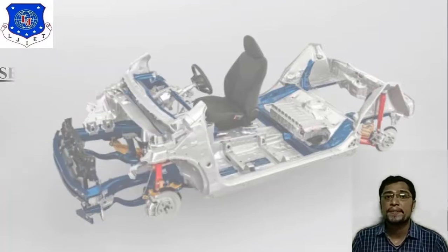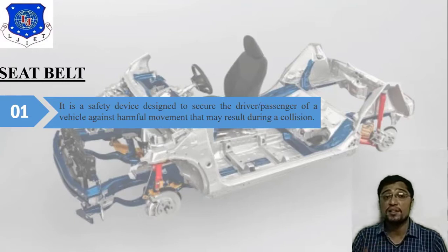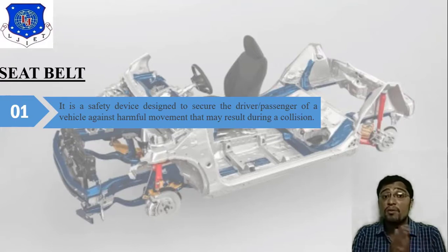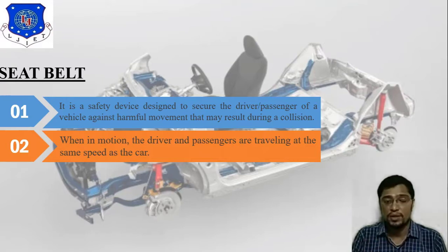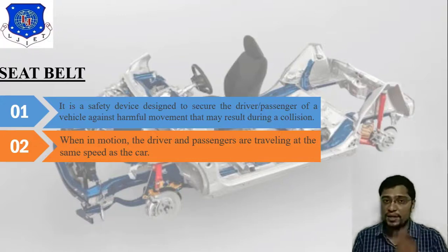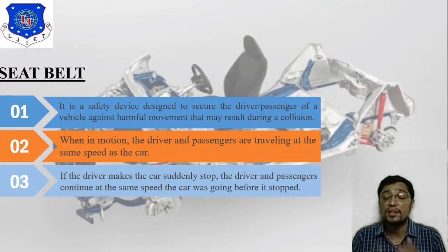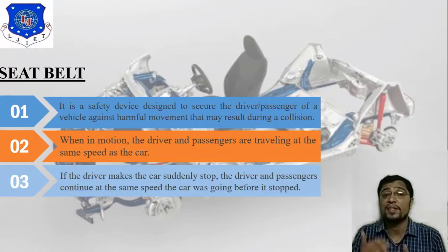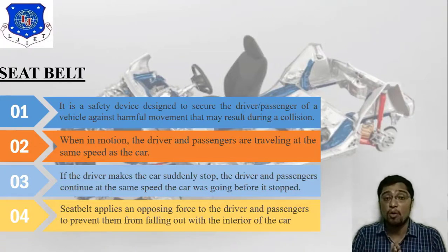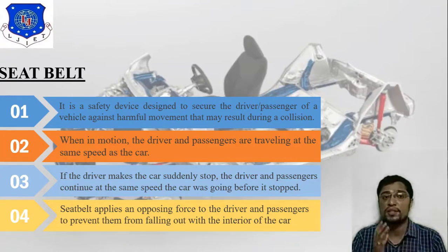The seatbelt is a safety device designed to secure the passenger or driver of a vehicle against harmful movement that may result during a collision. When the car is in motion, the driver and passenger are traveling at the same speed as the car. If the driver makes the car suddenly stop, the driver and passenger continue at the same speed the car was going before it stopped. The seatbelt applies an opposite force to the driver and passenger to prevent them from hitting the interior of the car.